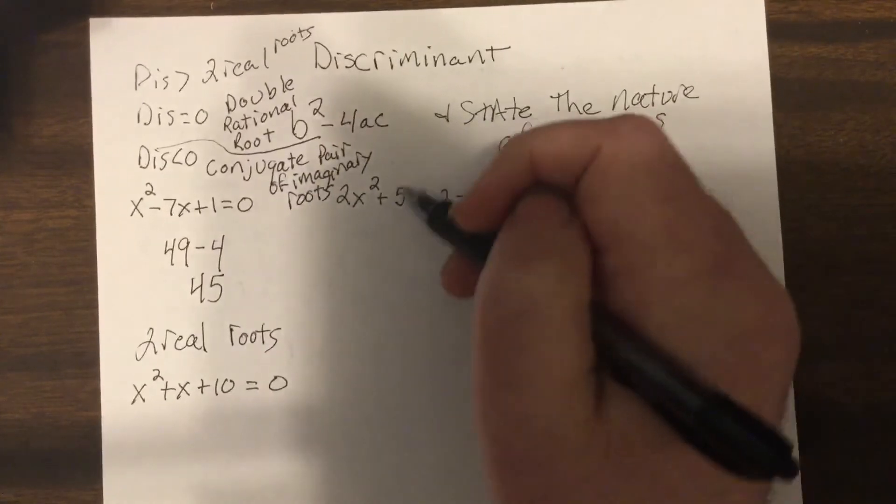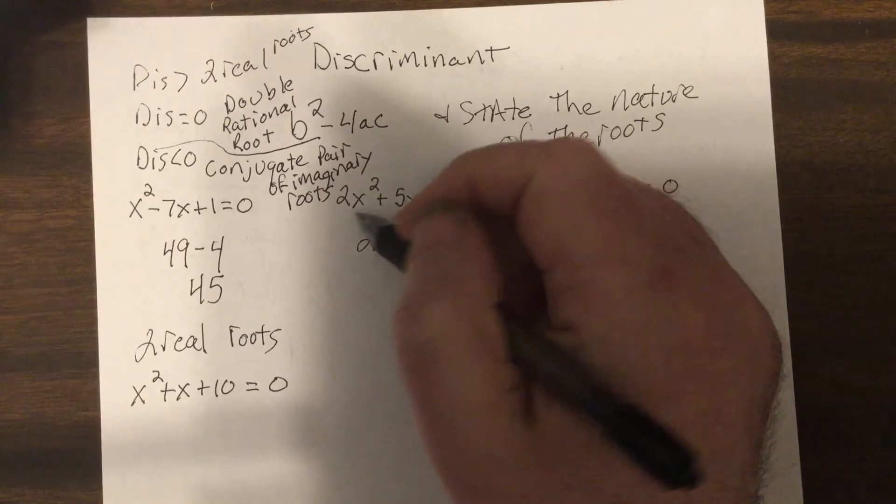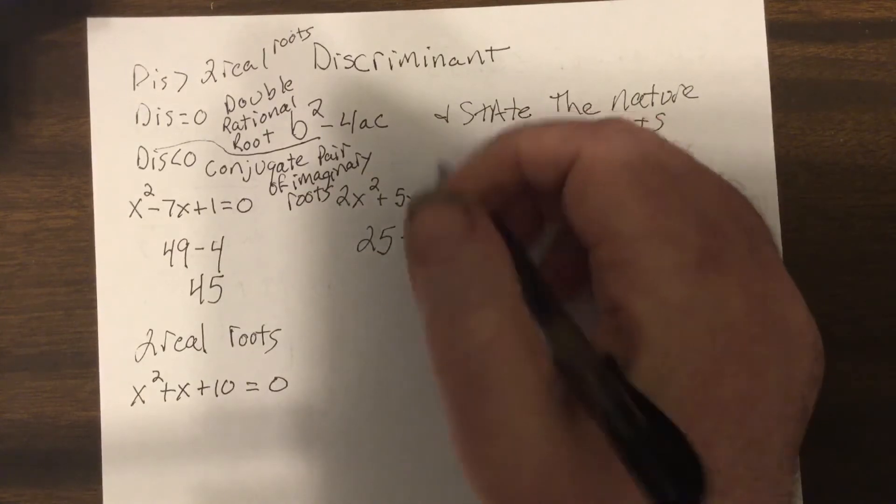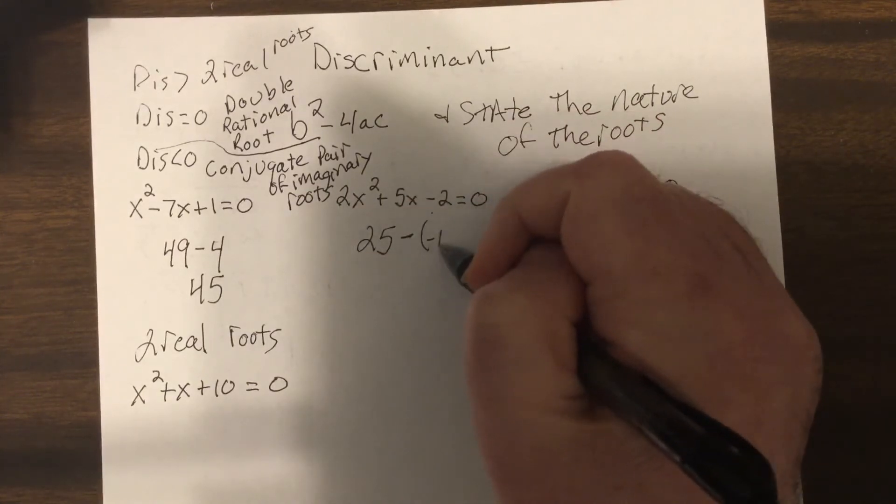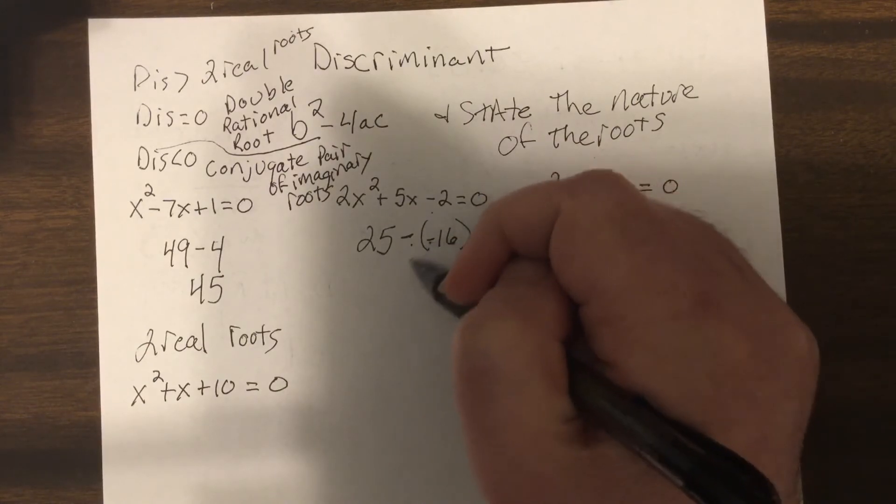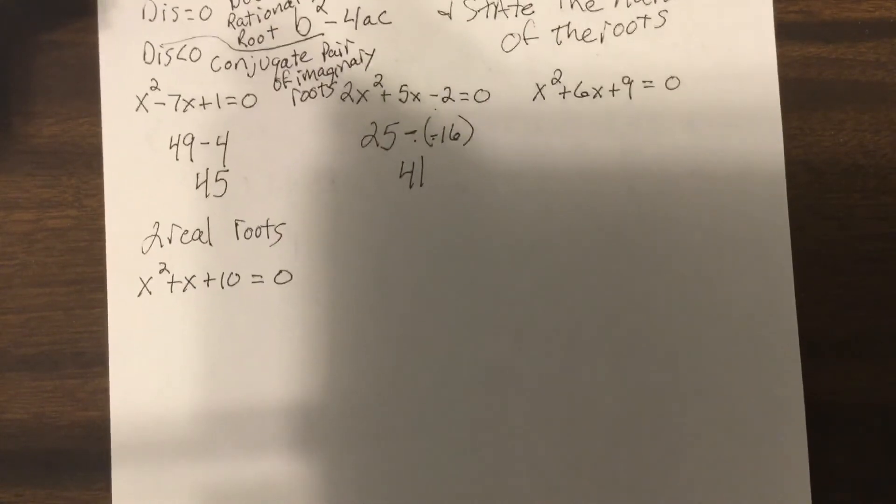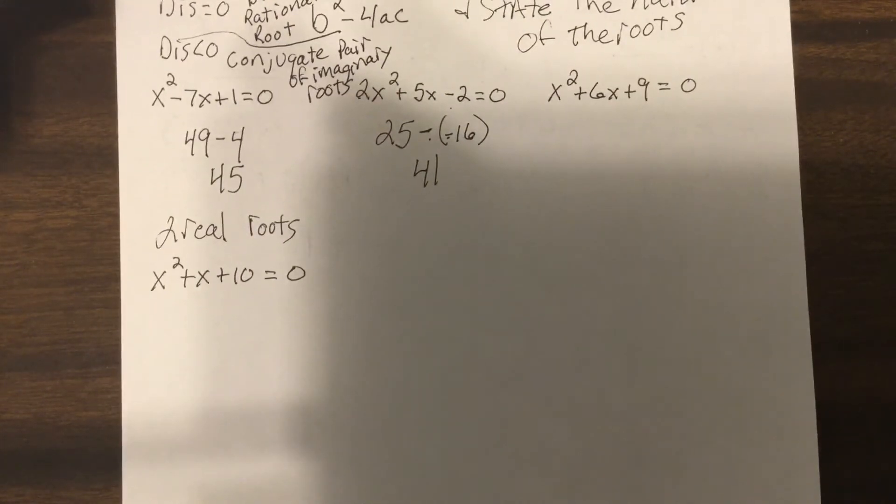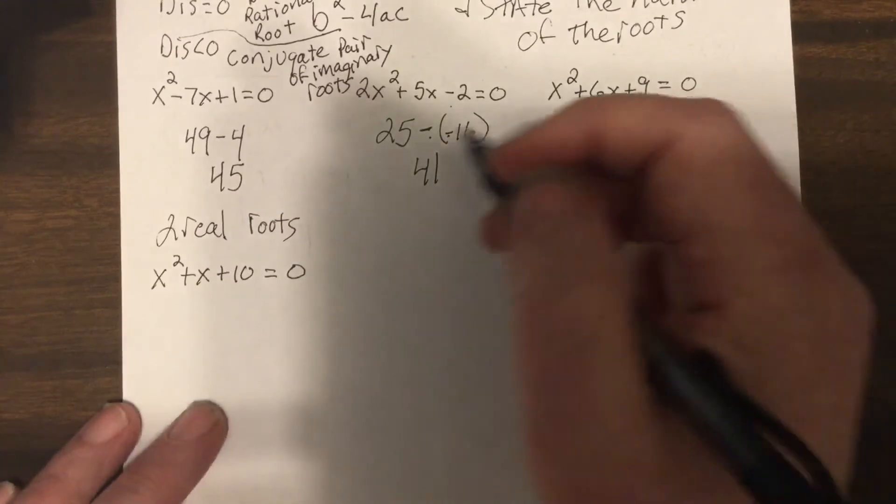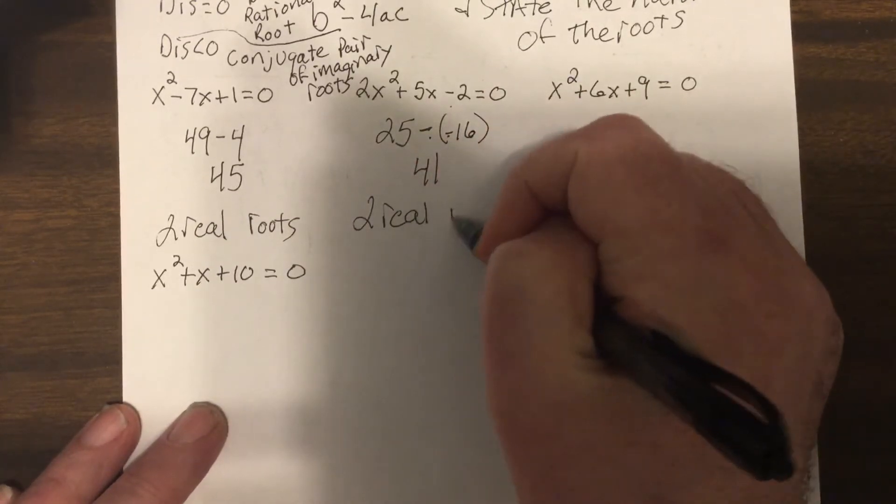So this one, b squared is 25, minus 4 times 2 times negative 2, would be negative 16, minus a negative is plus, so it'd be 41. Now again, for what we're trying to do, 41 is not the important point, it's positive, so it's two real roots.